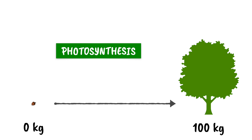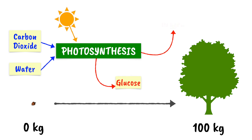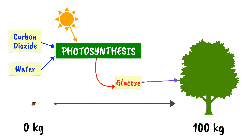Plants take in material in the form of carbon dioxide and water, and using energy from sunlight, they produce glucose. There's also oxygen, but that's a waste product of photosynthesis and it doesn't contribute to the mass of the plants. The carbon compound that's produced — glucose — has two possible fates. One is to go on to make physical plant biomass, forming compounds like cellulose, for example.